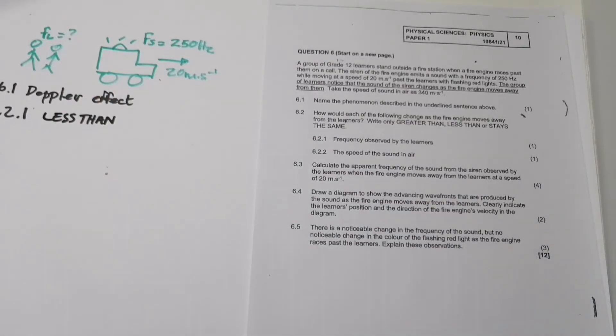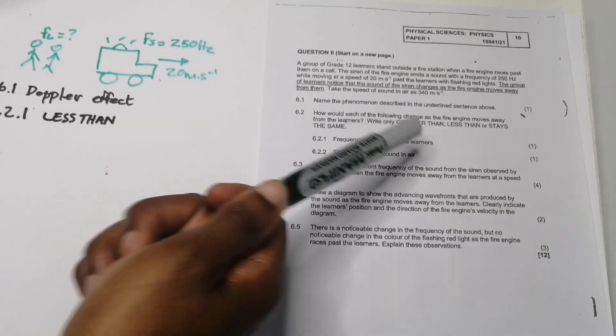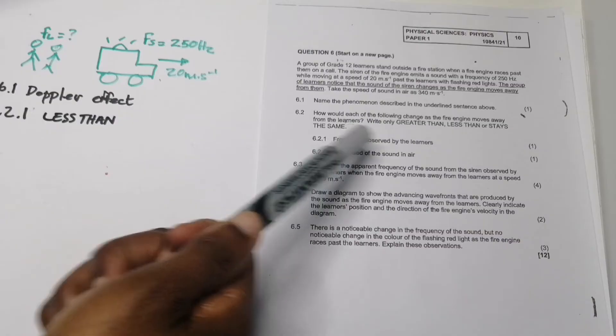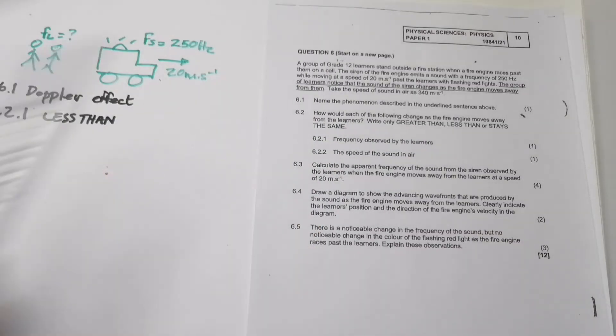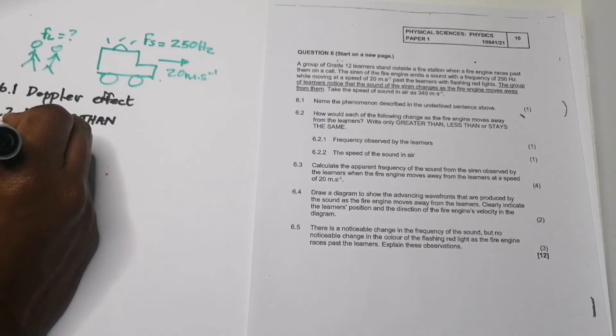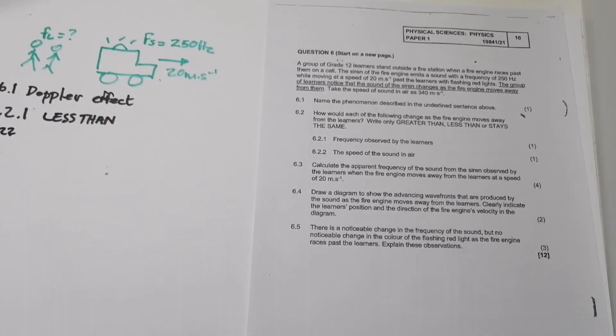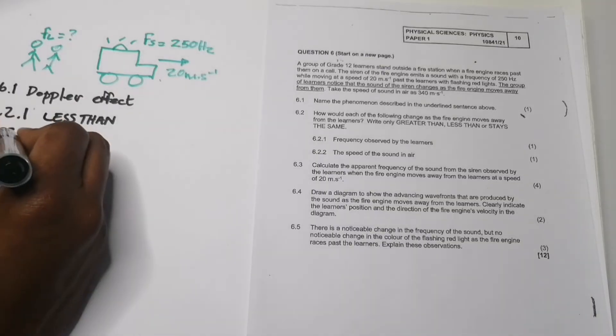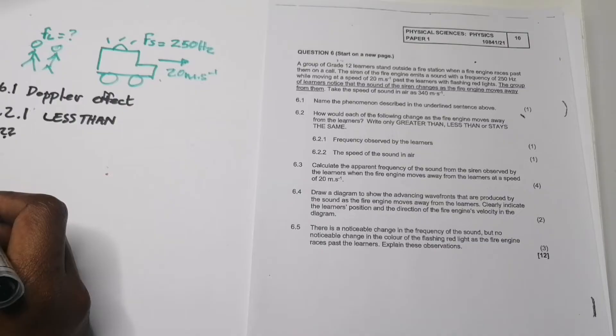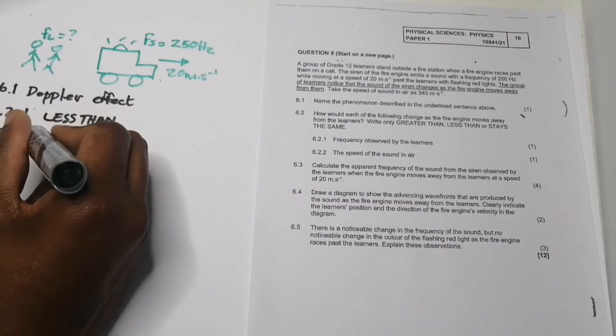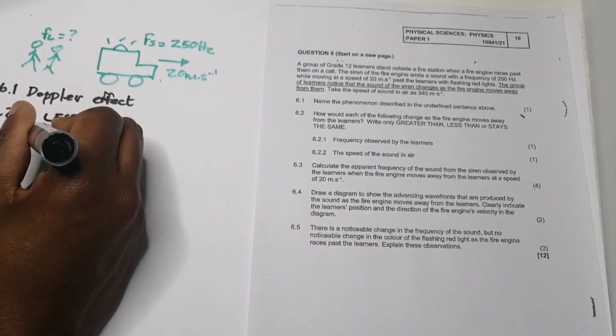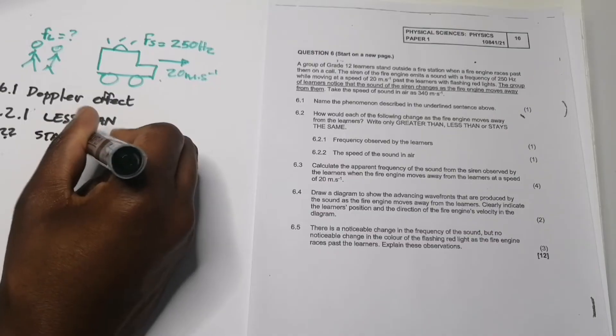In 6.2.2, they want to know what would the speed of sound in air do. Please remember that the speed of sound remains the same - it does not change unless you change the atmosphere or the mode of propagation. It stays the same.